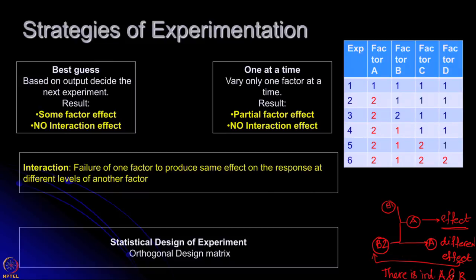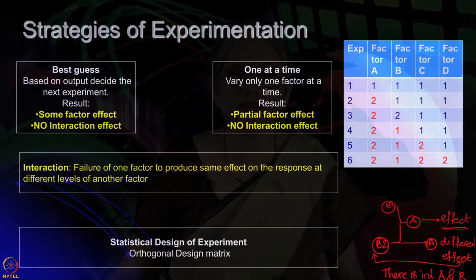We will explain interaction effect again because it is very important, and we will revisit it. When you follow the best guess or one-at-a-time strategies, you are not able to get any interaction effect. Therefore, we are suggesting that statistical design of experiment with an orthogonal design matrix is the best possible strategy.